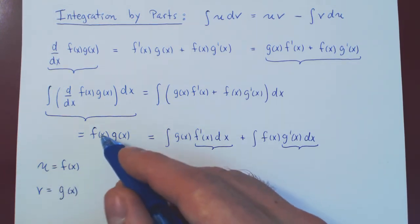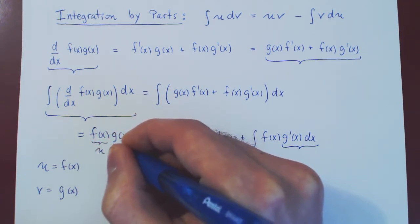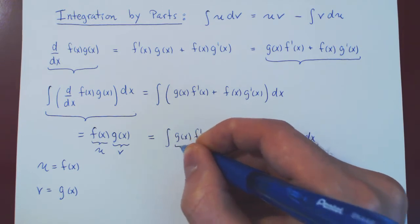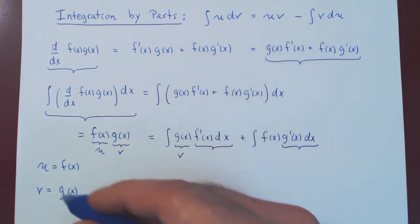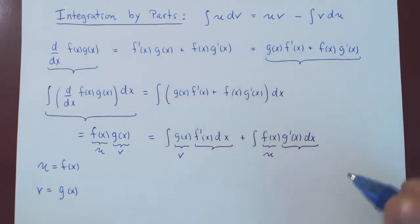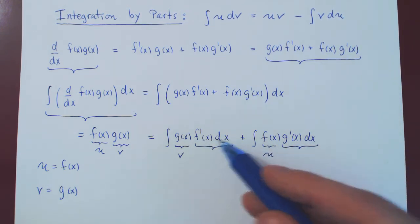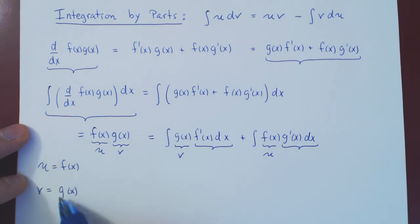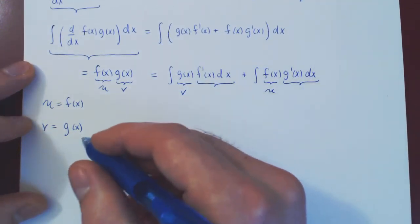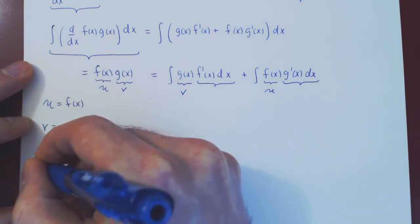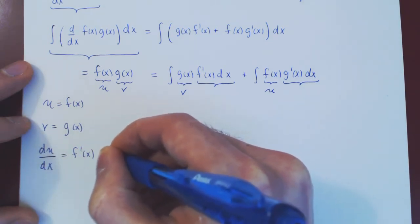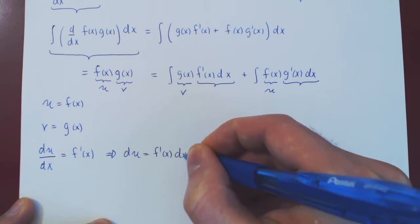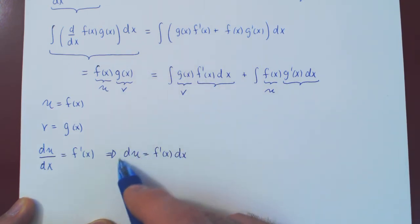If we let u be f(x) and v be g(x), then f(x) times g(x) on the left is just uv. We're still missing f'(x) dx and g'(x) dx. Since u and v are both functions of x, if I differentiate u with respect to x I get f'(x), and multiplying across by dx gives du equals f'(x) dx. So f'(x) dx is simply du.